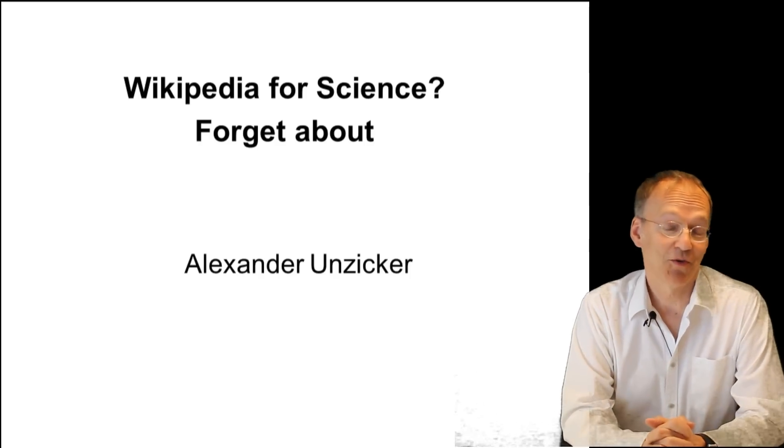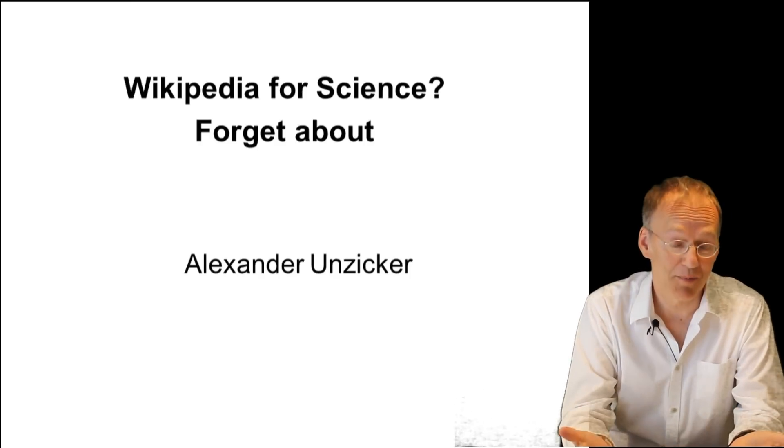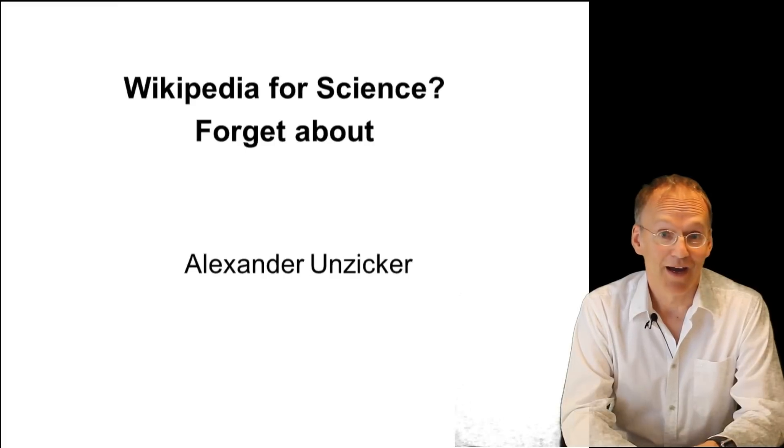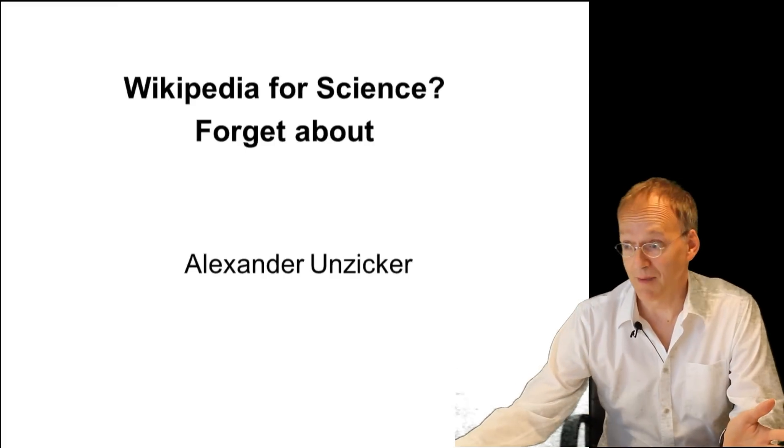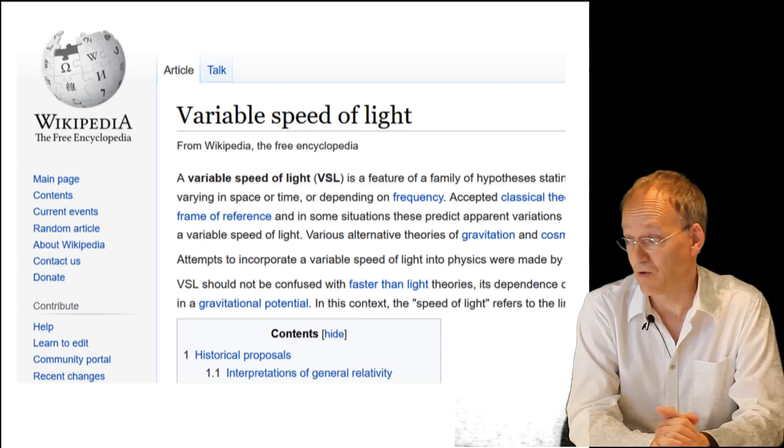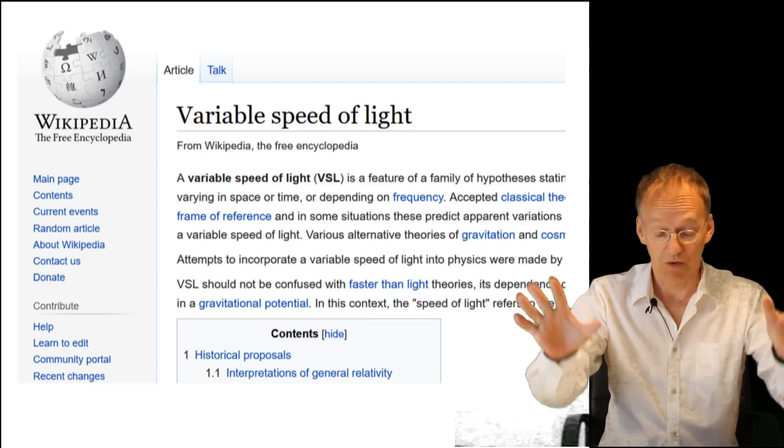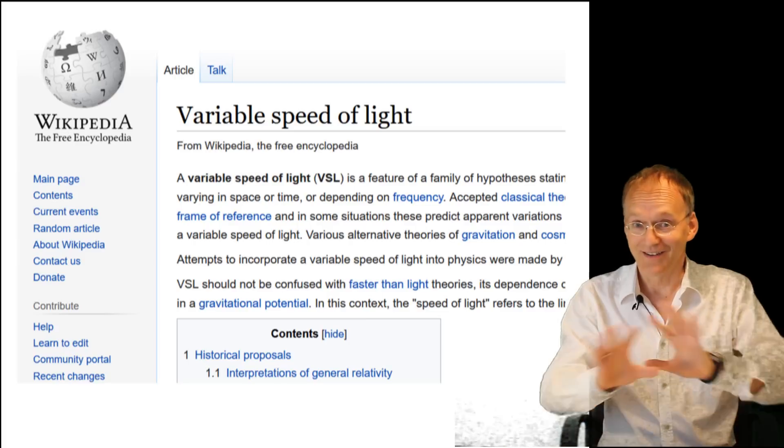Welcome to Real Physics. Today I have a special topic: science in Wikipedia. Forget about it. Now I admit I haven't checked all science articles, but I give you a prominent example from theoretical physics - the article about variable speed of light.